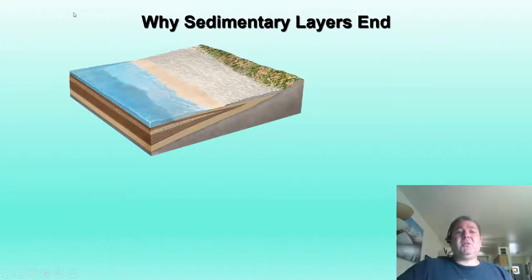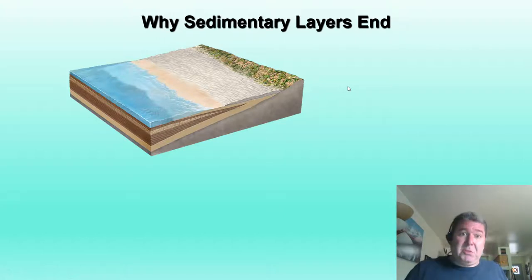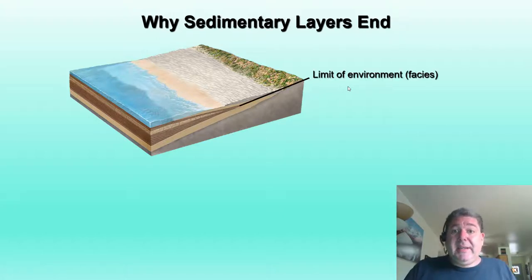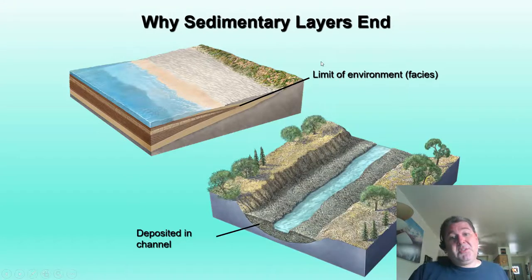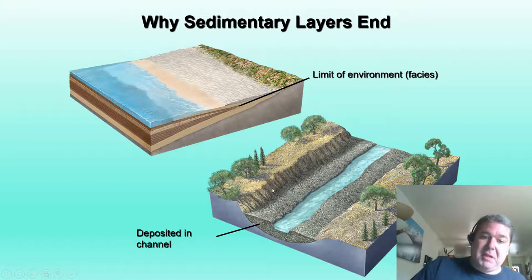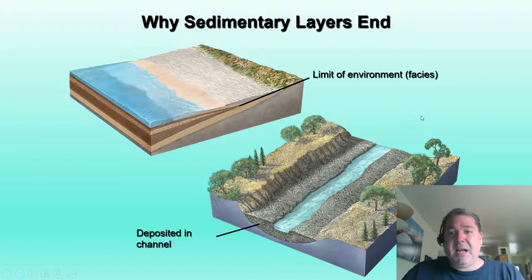Why do sedimentary layers end? This goes back to Steno's principle of lateral continuity — a layer will continue until forced to end. It can end because the environment changes: the facies shifts from beach to lagoon or sand dune facies. Or it can end by physical means — sediment deposited in a channel can't get outside those river valleys, which physically stops deposition.